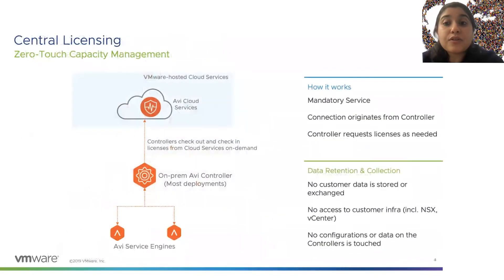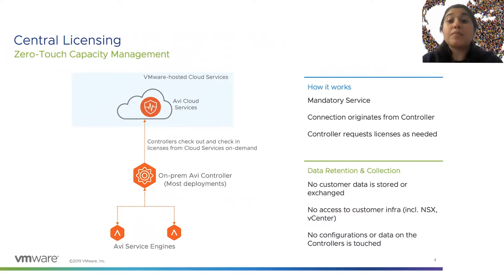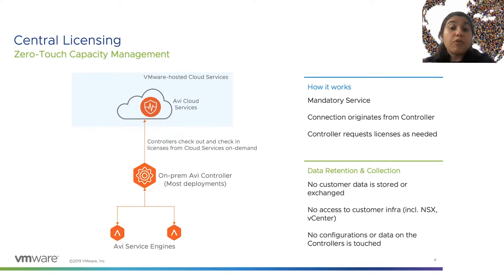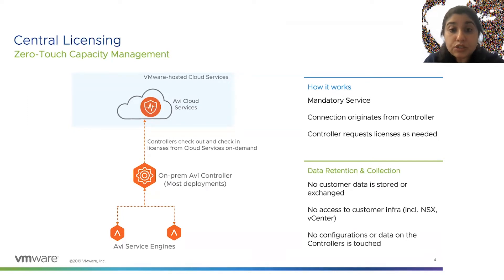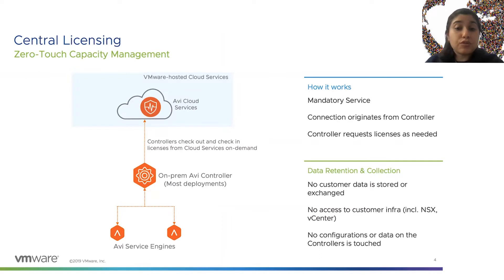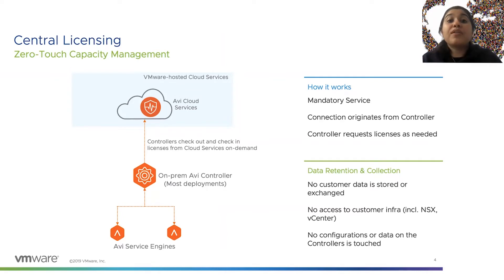From the set of SaaS services, the mandatory service is the central license service. The way it works is the controller connects to the Pulse platform, and the Pulse platform provides a set of licenses to the controller on a need-to basis. Admins can create policies on the controller to define how many licenses are mandatory and how many the controller can burst into. Security is paramount — no customer data is stored or exchanged with the central license service. There is no access to customer infrastructure, so you do not need to provide NSX or vCenter credentials, and no configuration is pushed into the controller by the central license service.